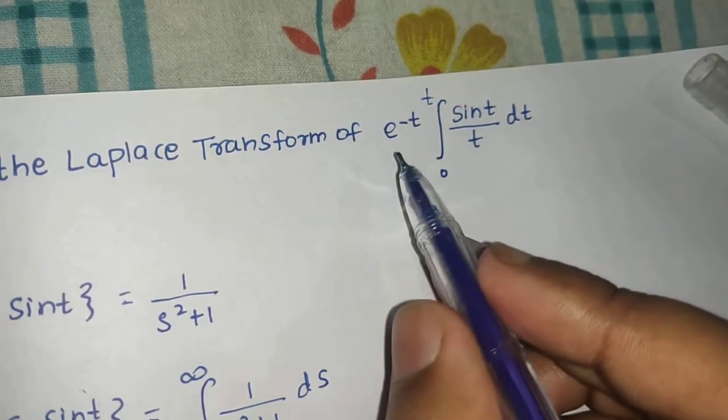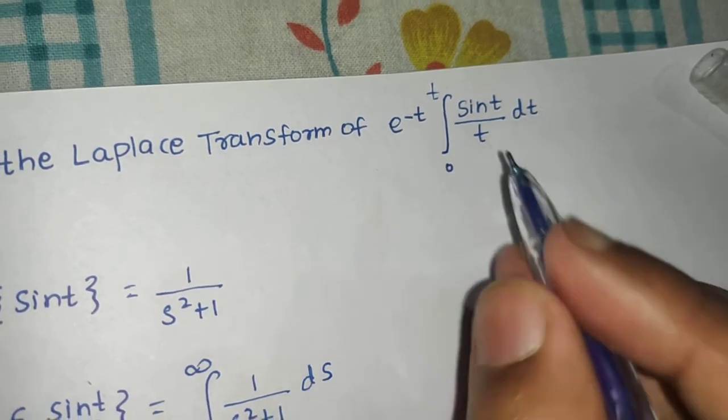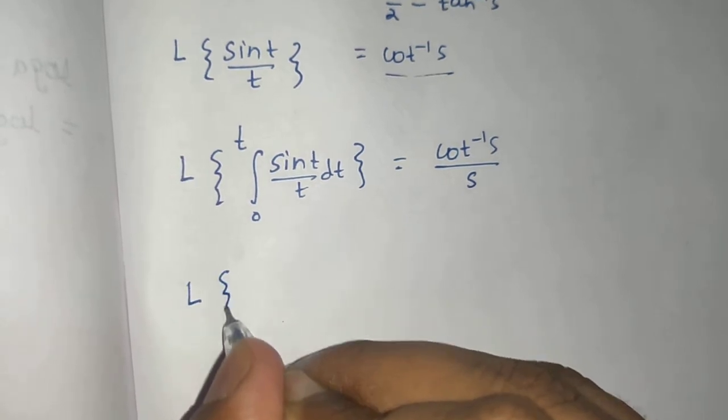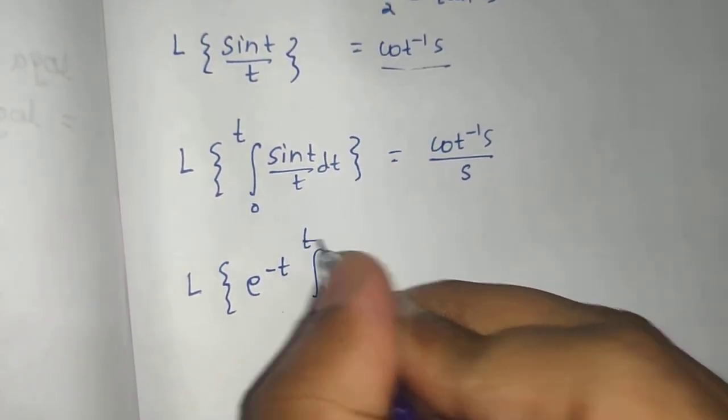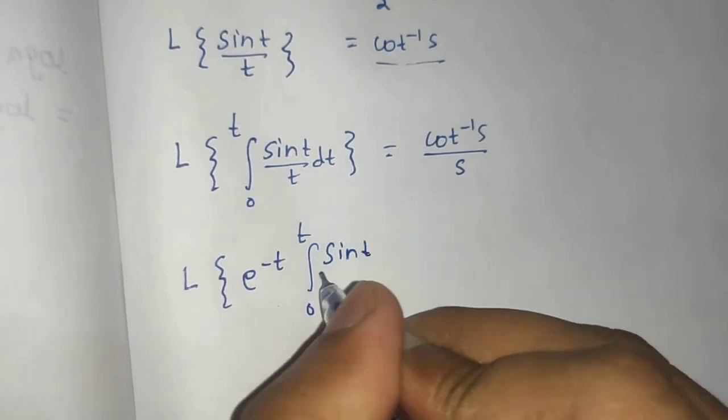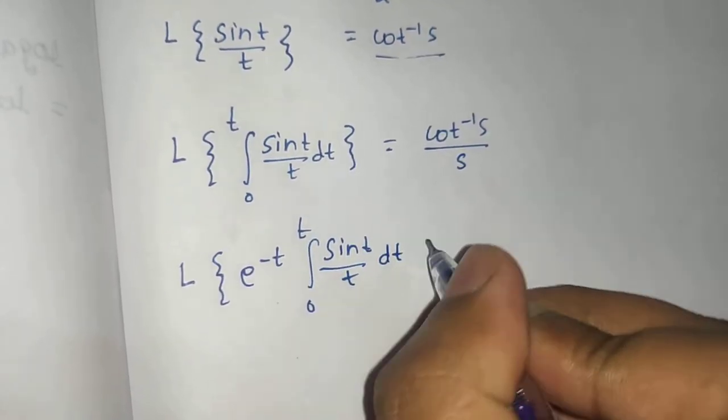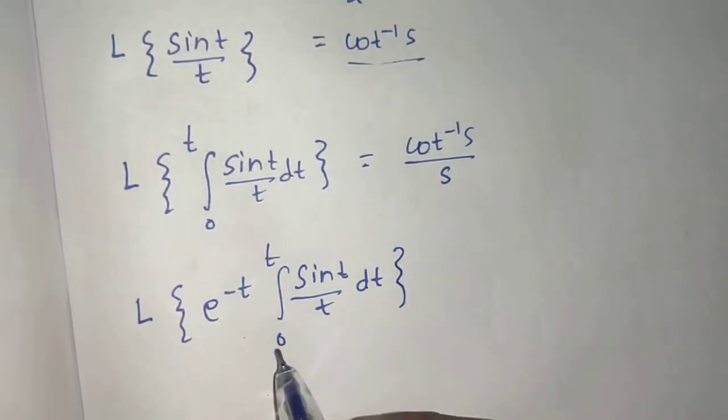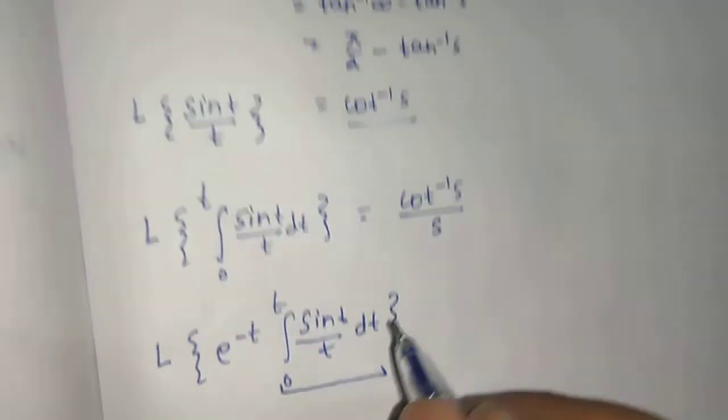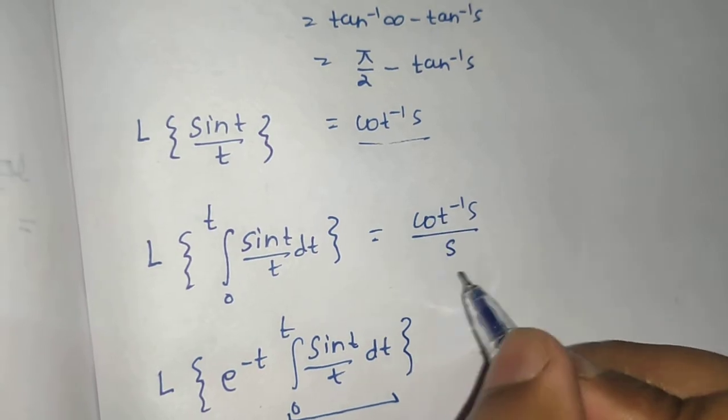Now again multiplication by e^(at), that means the first shift. So Laplace of e^(-t) times the integral 0 to t of (sin t)/t dt. This will be...